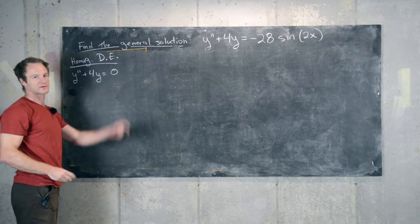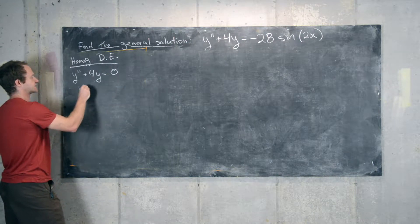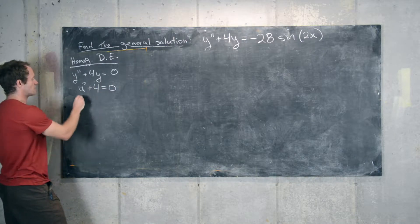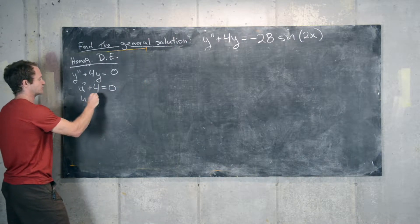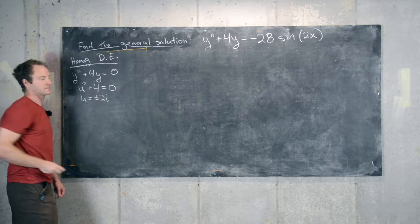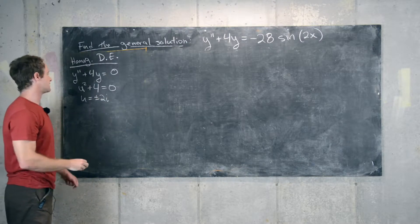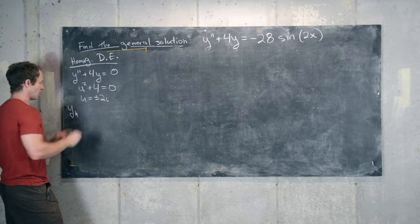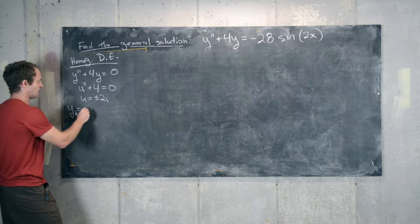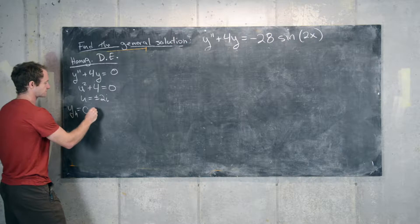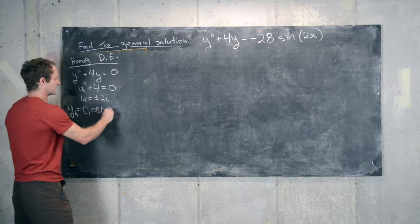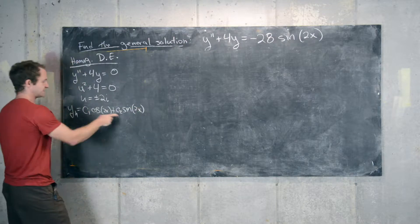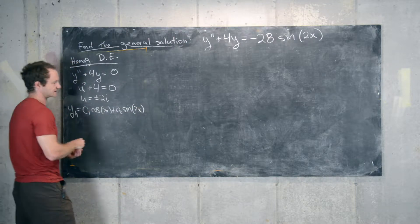In order to solve this, we need to look at its related polynomial, which is u squared plus 4 equals 0, which has roots equal to plus or minus 2i. By the theory of these homogeneous differential equations, that gives us a homogeneous solution of c1 cosine of 2x plus c2 sine of 2x, where c1 and c2 are arbitrary constants.